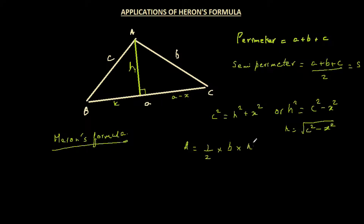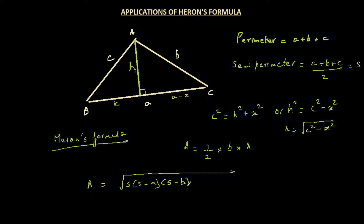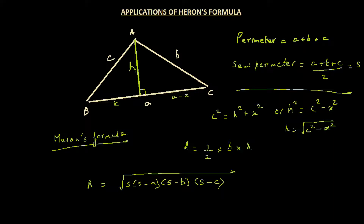He then used the formula half times base times height to arrive at what is now known as Heron's formula: the area of a triangle given its three side lengths equals the square root of S times (S minus A) times (S minus B) times (S minus C), where S is the semi-perimeter — the perimeter divided by 2 — which is (A plus B plus C) divided by 2.